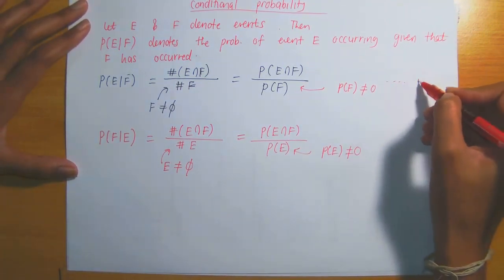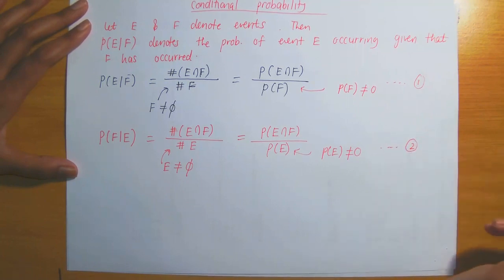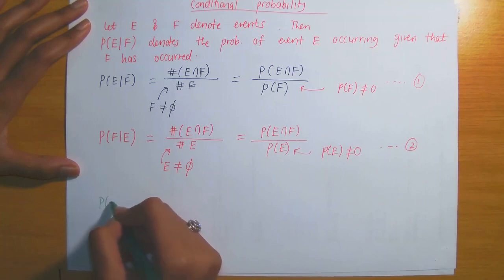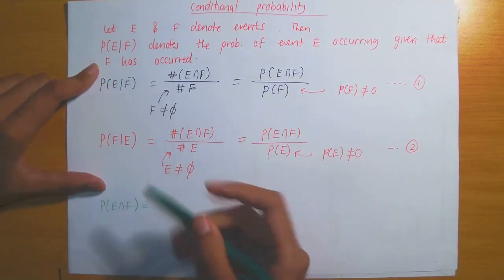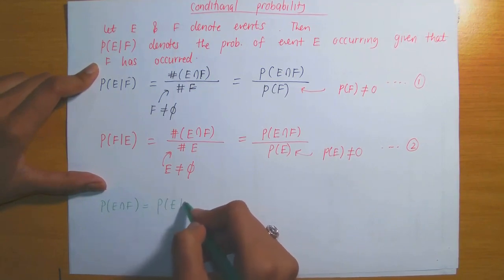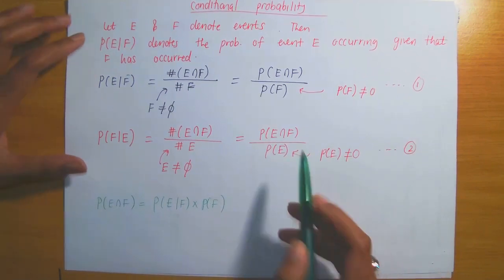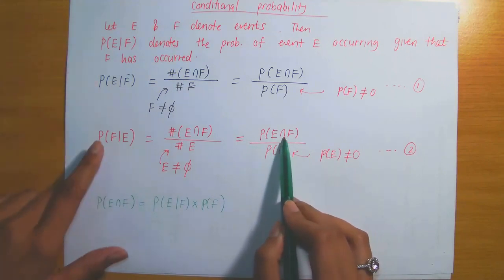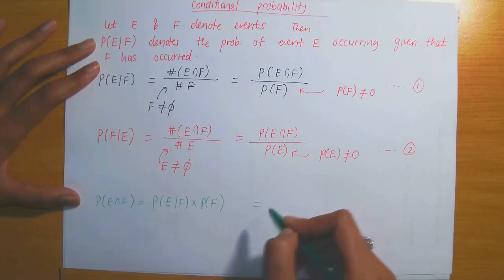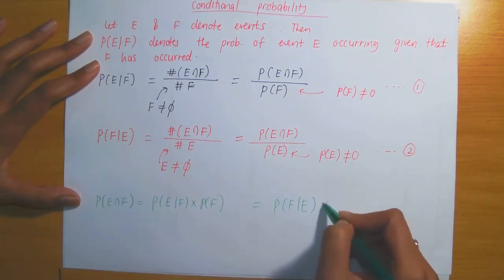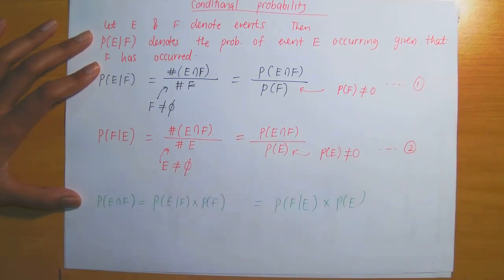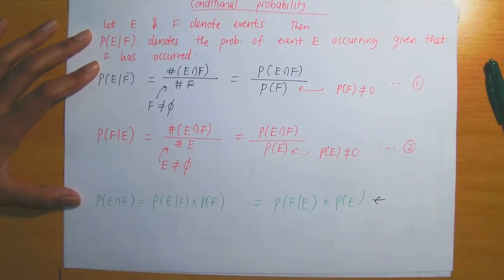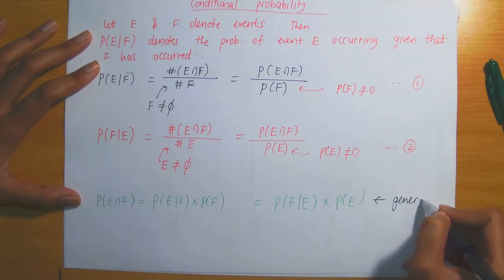Looking at these two equations, observe that both incorporate the probability of E intersection F. From equation one, the probability of E intersection F equals the probability of E given F, times the probability of F. From equation two, it equals the probability of F given E, times the probability of E. Setting these equal results in what we call the general multiplication law.